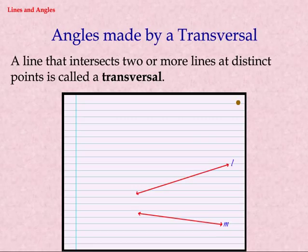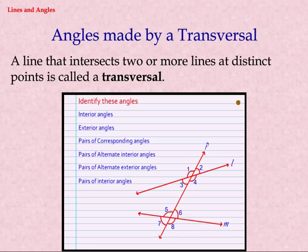Angles made by a transversal. A line that intersects two or more lines at distinct points is called a transversal.